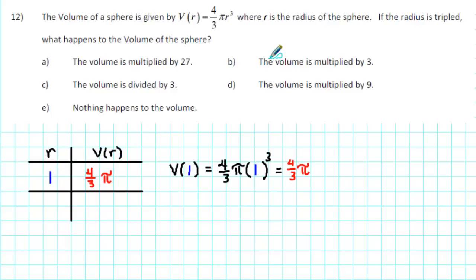Now we want to find out what happens if the radius is tripled. Well, if we triple 1, we end up with the number 3. So let's determine the volume when the radius is equal to 3.